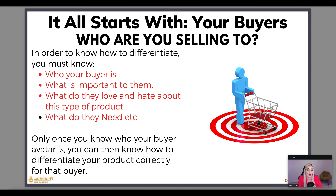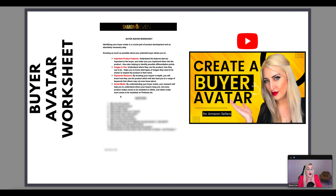It all starts with knowing who your buyers are. Before we get into examples — you must know who your buyer is. Who are you actually selling to? Is it a man, a woman, a pregnant woman, a stay-at-home dad, a five-year-old kid, little girls aged three to six? What's important to them? What do they love, what do they hate about the product, what do they need? Only once you know your buyer avatar can you know how to differentiate correctly.